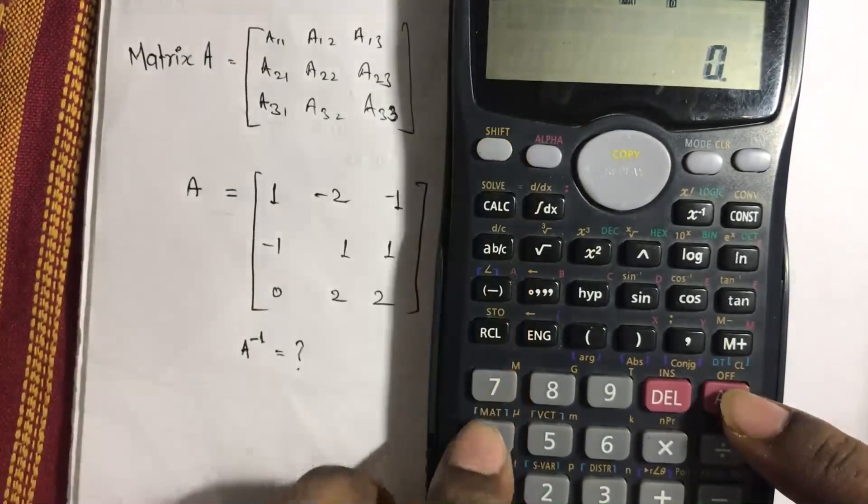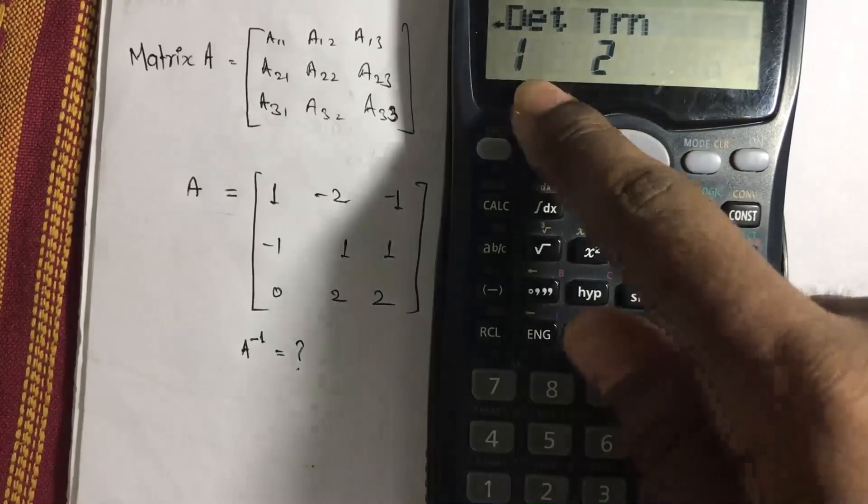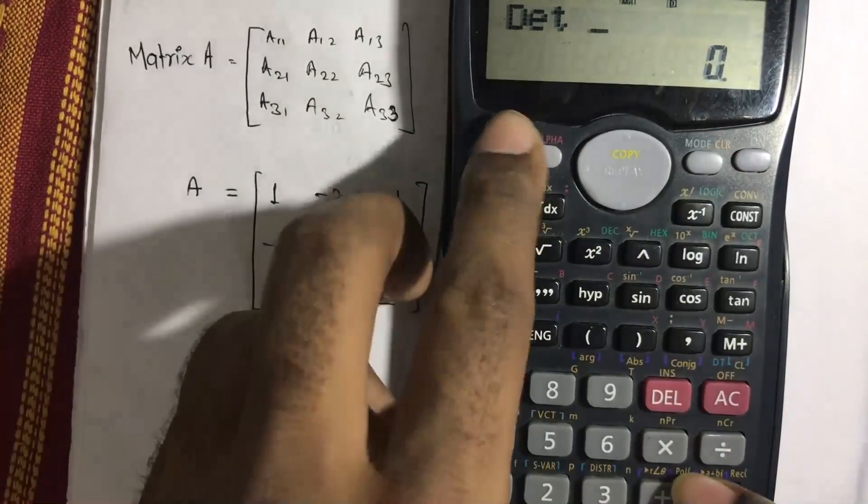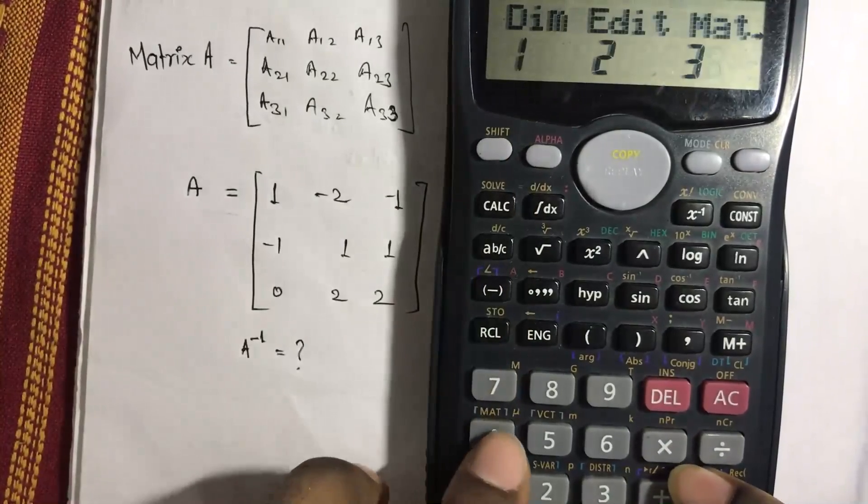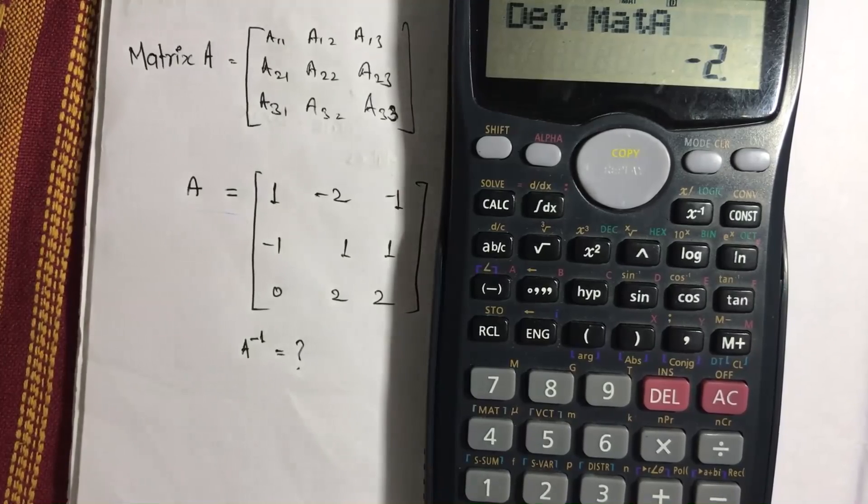And one more thing of this is, go to shift matrix clicking over here. You can find determinant, D4 determinant and transpose. So let's find determinant of a matrix. Which matrix you want to find? Select the matrix, shift 4, 3, A matrix. So if you want to find determinant, it's minus 2 of the matrix A.